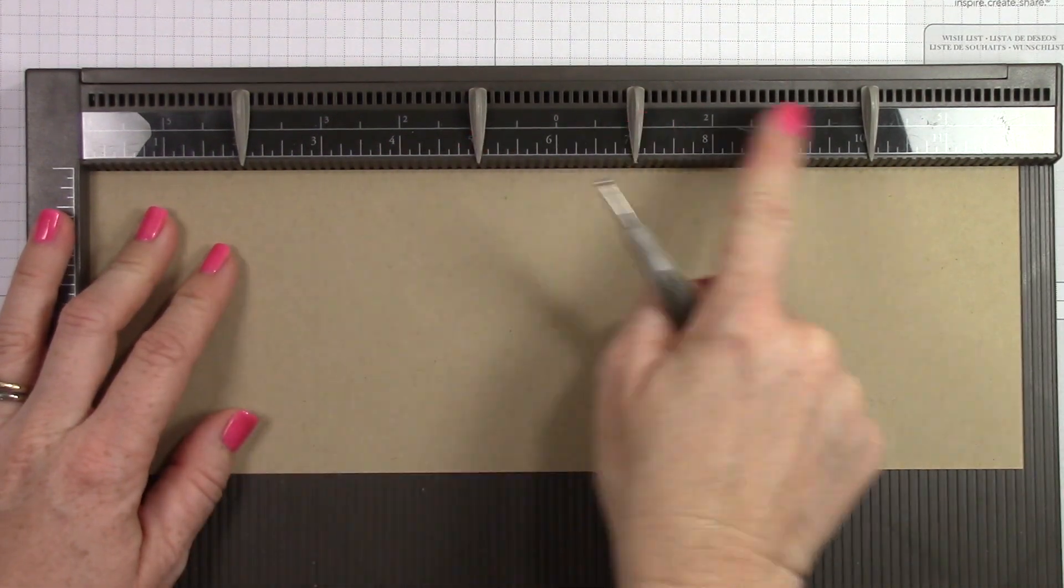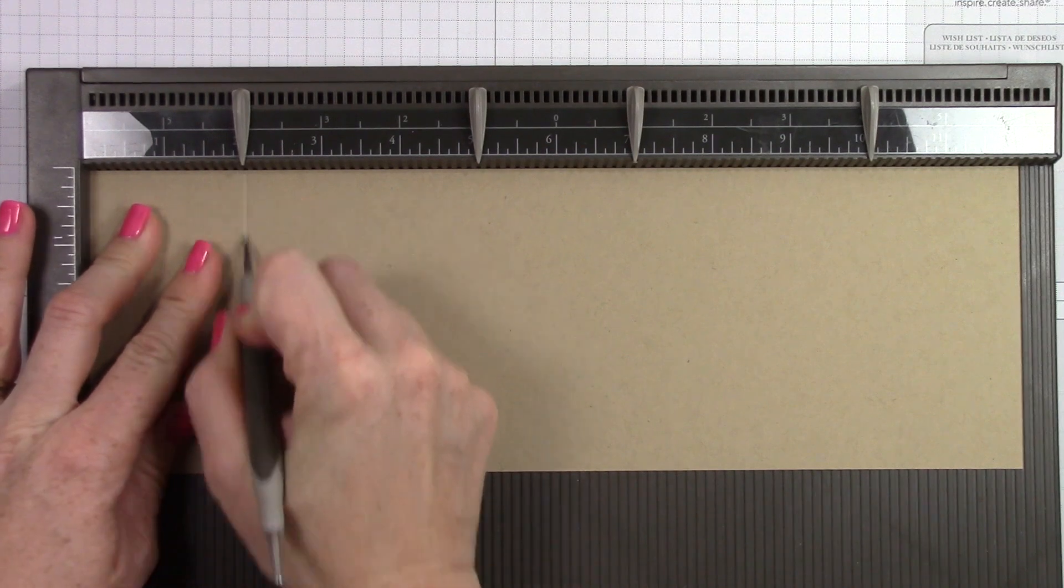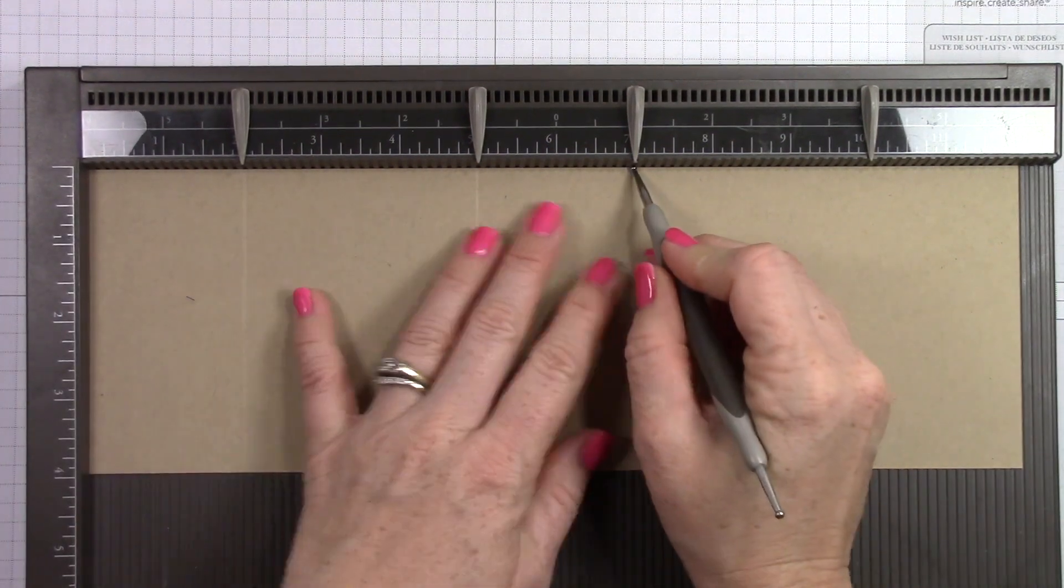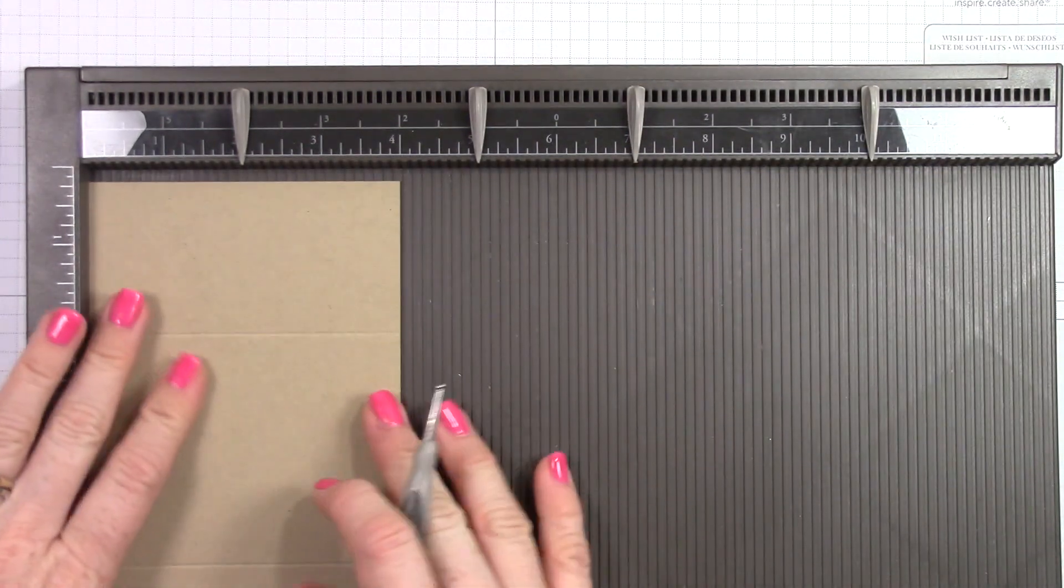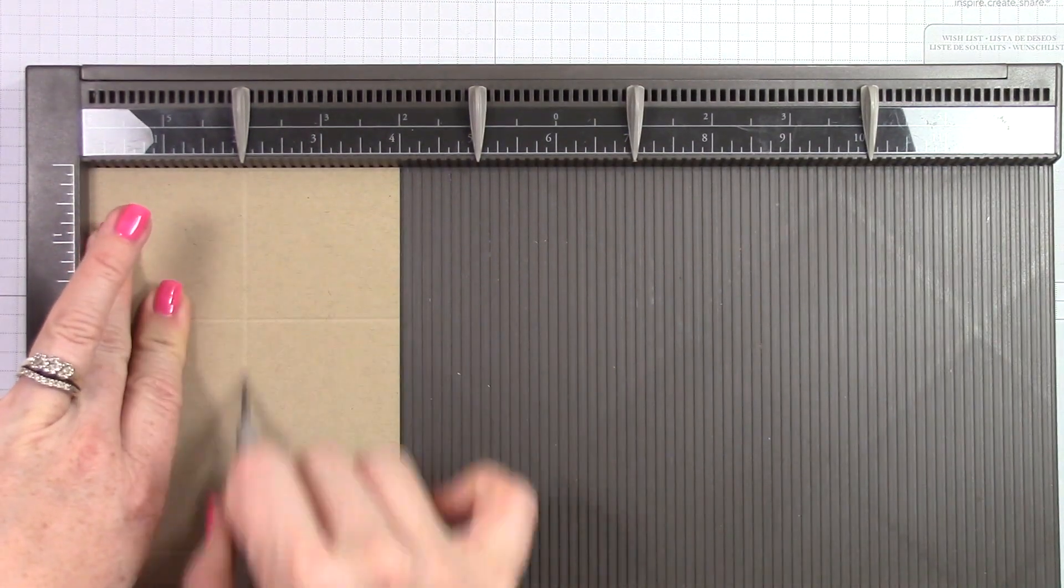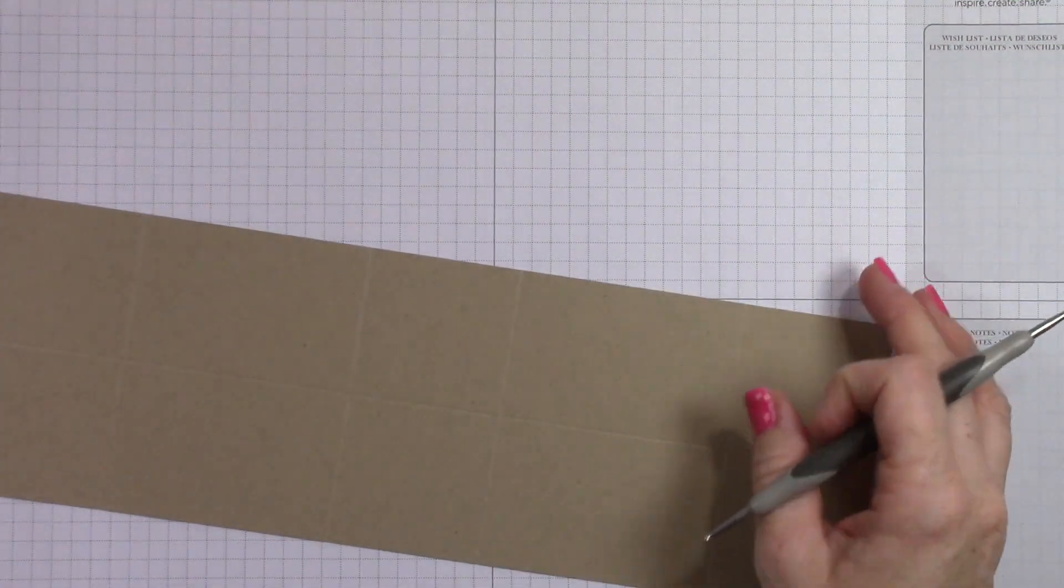This is cut at twelve by four and a quarter. So I'm scoring at two, five, seven, and ten. And then I'm going to turn and score at two inches. I'm sorry, this was cut at four by twelve.